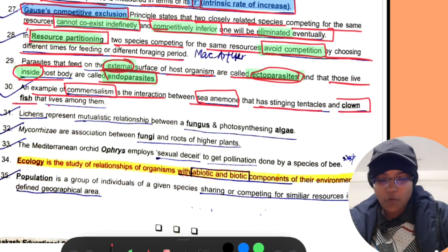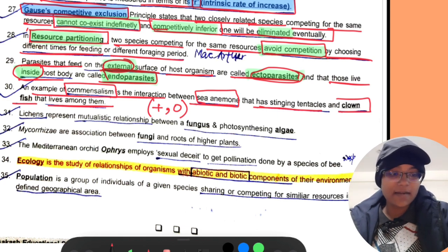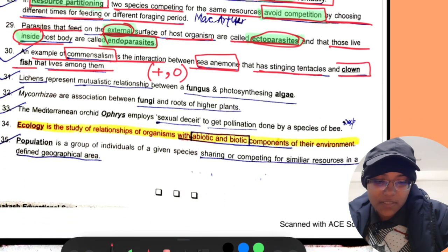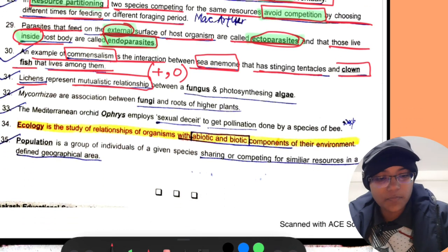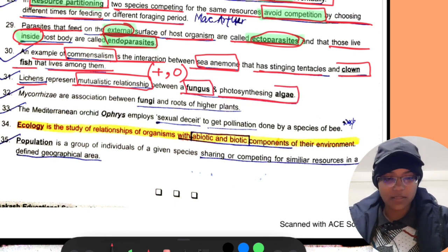An example of commensalism is the interaction between sea anemone that has stinging tentacles and clown fish that lives among them.